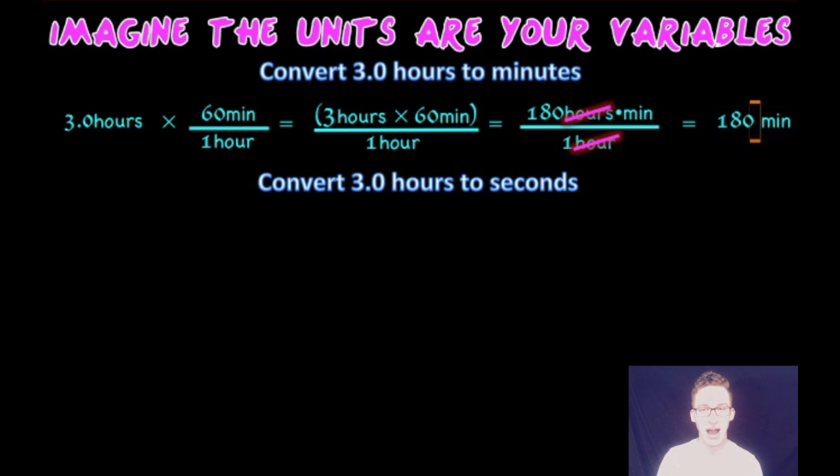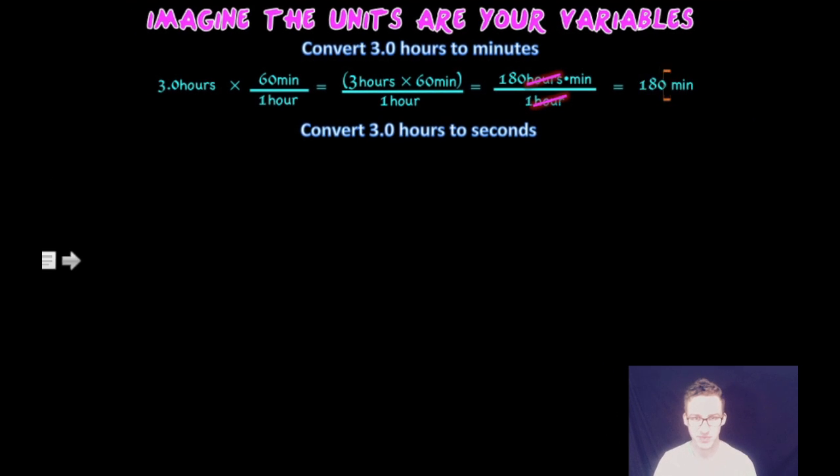Now we're going to crank it up one more time. This time we're going to convert 3.0 hours to seconds. We're going to start with our known amount of 3.0 hours. We're going to set up a series of fractions or conversion factors.